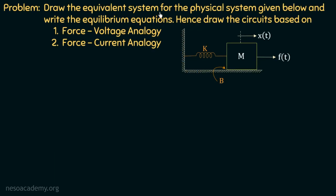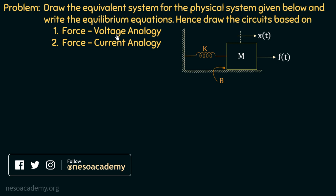Draw the equivalent system for the physical system given below and write the equilibrium equations. Hence, draw the circuits based on: number one, force-voltage analogy, and number two, force-current analogy. One physical system is given to us and firstly we have to draw the equivalent system for this mechanical system and write the equilibrium equations, then draw the circuits based on force-voltage analogy and force-current analogy.